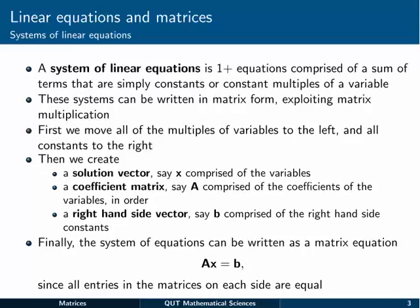Essentially, we move all of the multiples of variables to the left and all the other constants to the right. We then create what's called the solution vector, often written as x, which is comprised of the variables — say x, y, and z, or maybe x1, x2, and x3. The coefficient matrix, often written as A, is comprised of the coefficients of the variables, written in the correct order to correspond with the solution vector. A right-hand side vector is then made up of all of the constants that don't have anything to do with the variables — it's often written as b.